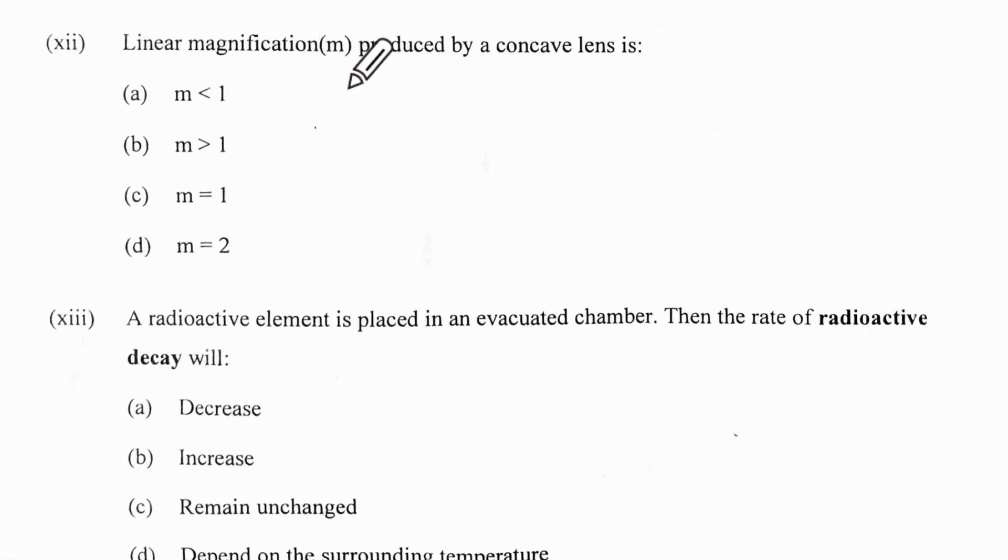12th one: the linear magnification M produced by a concave lens. You know that concave lens always produces a diminished image. And it will be an upright image.